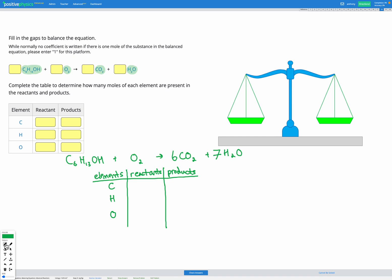Adding those up, I've got 6 carbons on the left in the reactants and I've got 6 in the products. For hydrogen I've got 13 and 1 which is 14 in the reactants. In the products I've got 7 times 2 which is 14.